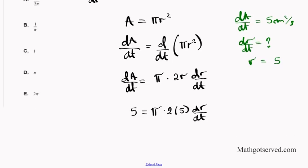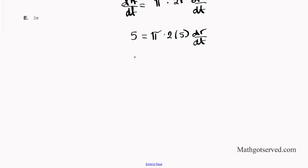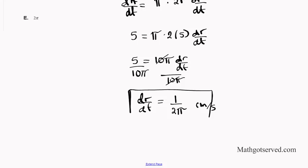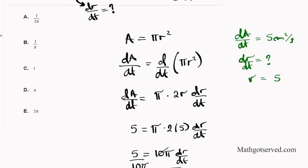To isolate dr/dt, divide both sides by 10π. The 5s cancel, giving dr/dt = 1/(2π) centimeters per second. That is the rate at which the radius is changing. The answer is A.